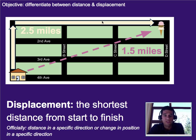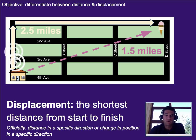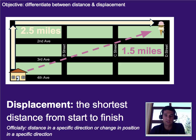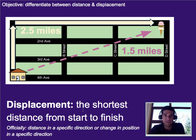Displacement is the shortest distance from start to finish. That means that even if you're walking way out of the way, what we count is just as if you could fly or walk through walls — the direct distance from start to finish, regardless of what you actually did. Officially, displacement is defined as distance in a specific direction, or change in position in a specific direction.